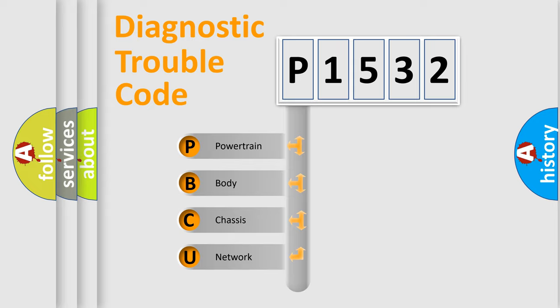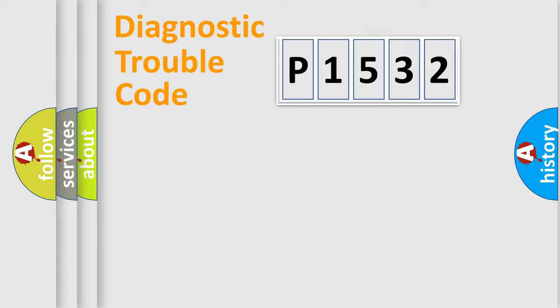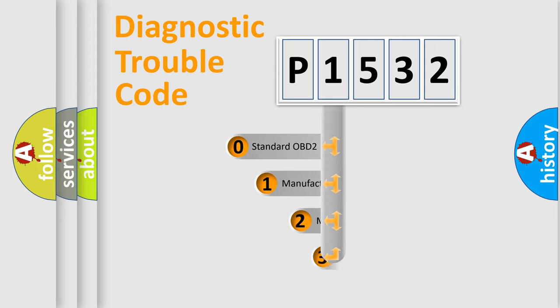We divide the electric system of an automobile into four basic units: Powertrain, Body, Chassis, and Network. This distribution is defined in the first character code.